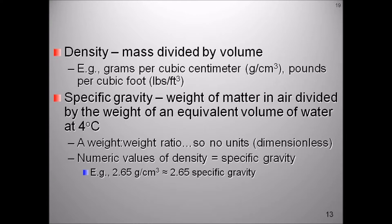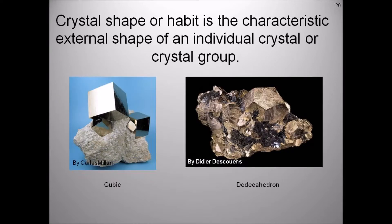In mineralogy, crystal habit is the characteristic external shape of an individual crystal or crystal group when that mineral is allowed to grow uninterrupted. Some minerals have crystals that exhibit regular polygons that are helpful in their identification. Magnetite crystals sometimes occur as octahedrons, garnets often as dodecahedrons, and halite crystals are cubes. Although most minerals exhibit only one common crystal shape, some such as pyrite have two or more characteristic habits. Pyrite may be either cubic or dodecahedral.